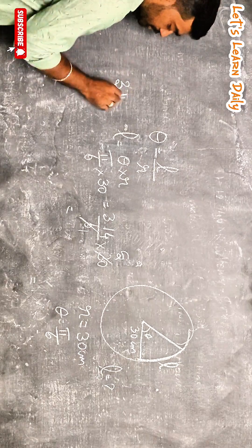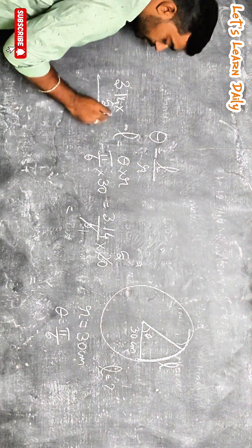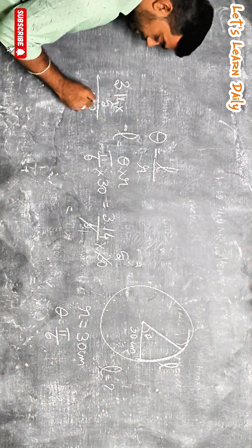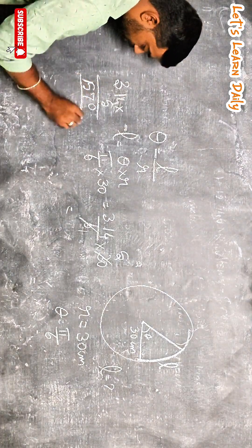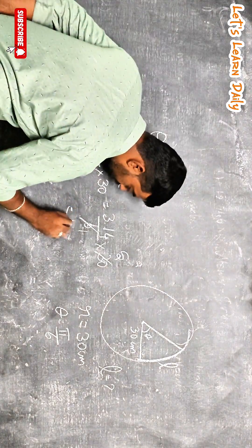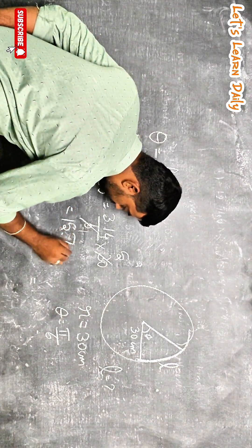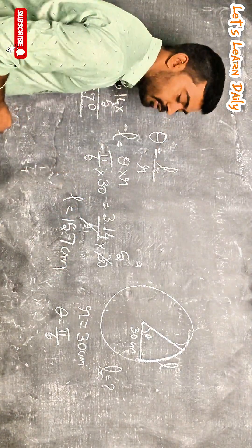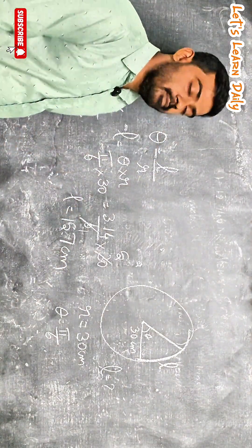So 3.14 into 5, which gives 15.7. The answer will be 15.7 centimeter. L equals 15.7 centimeter.